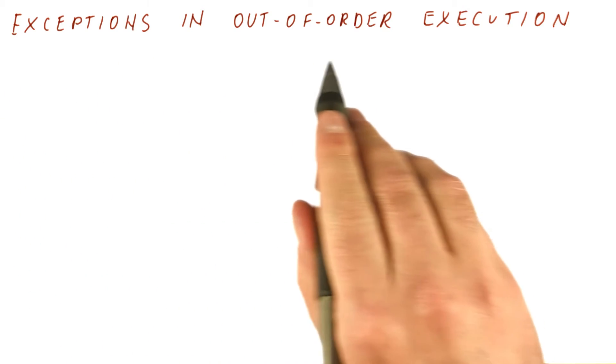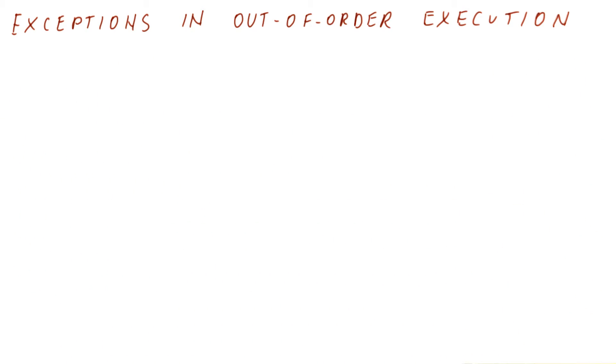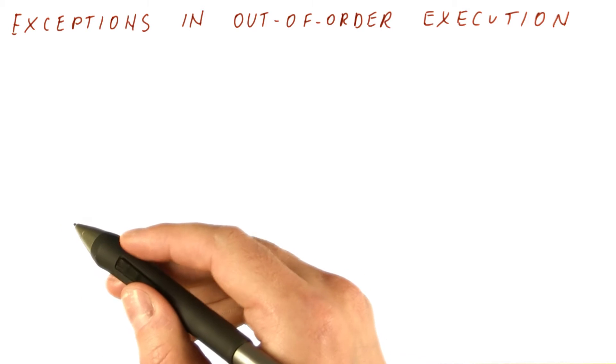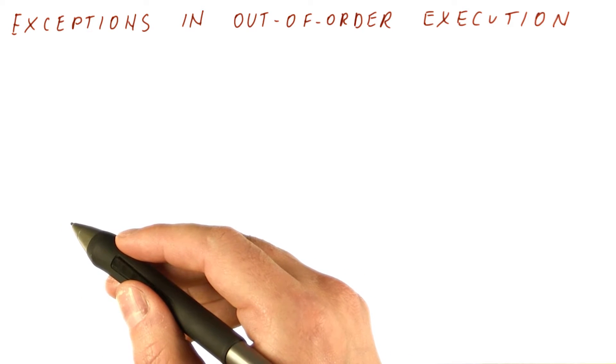So now we're going to talk about exceptions in out of order execution, which, as we said, is part of what's wrong with Tomasulo's algorithm as far as modern processors are concerned.